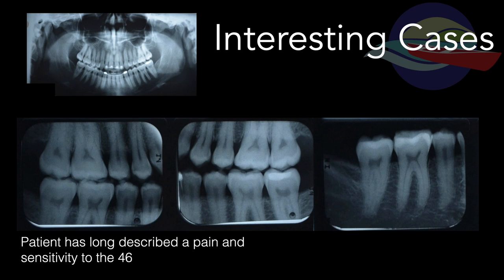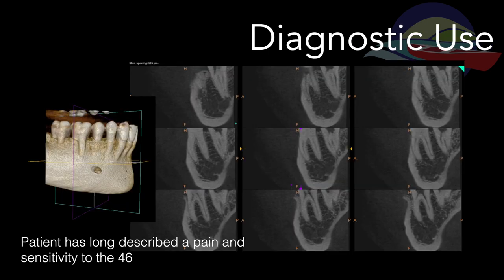So we prescribed a CBCT. On that 3D image, we can see that the 4-6 that they had been describing as sensitive to hot and cold is not fully embedded in bone. Likely from the orthodontic work, this tooth has probably been pulled outside of the cortex of the mandible and one root is not protected. Unfortunately, there's not much that can be done for this patient — but at least now we have an answer for their discomfort.